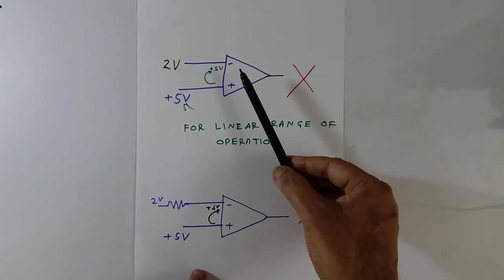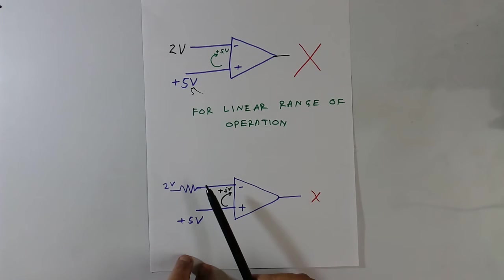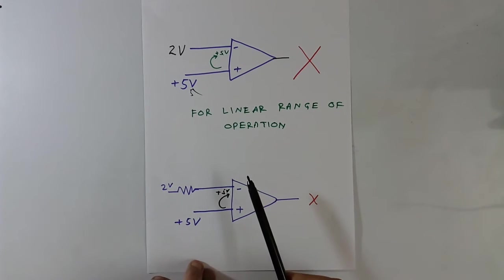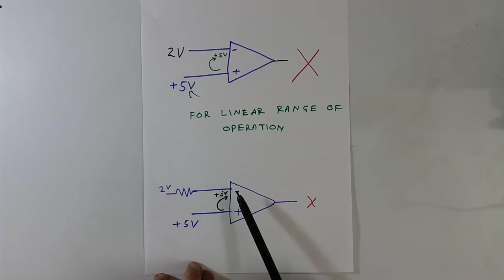This is similar to this. Only thing, I have added one resistor. Here also it will not operate. This negative terminal will follow positive terminal voltage, that is plus 5V. This is one example. I have connected 2V. So current has to flow. These voltages will not be equal. It will go to saturation range.